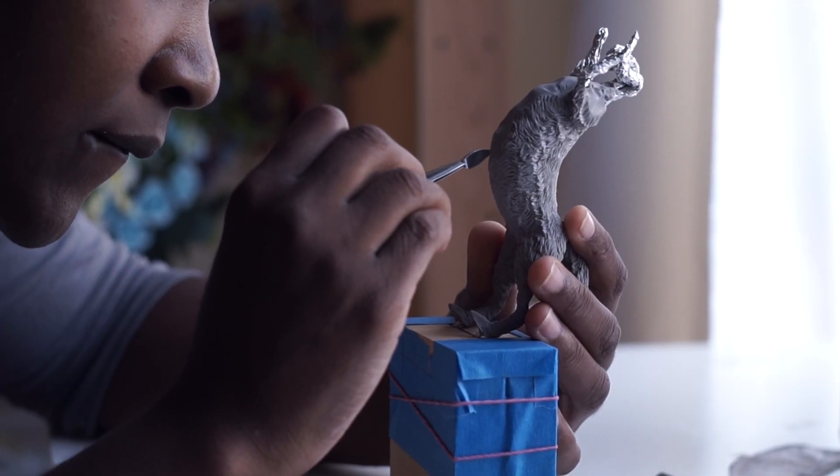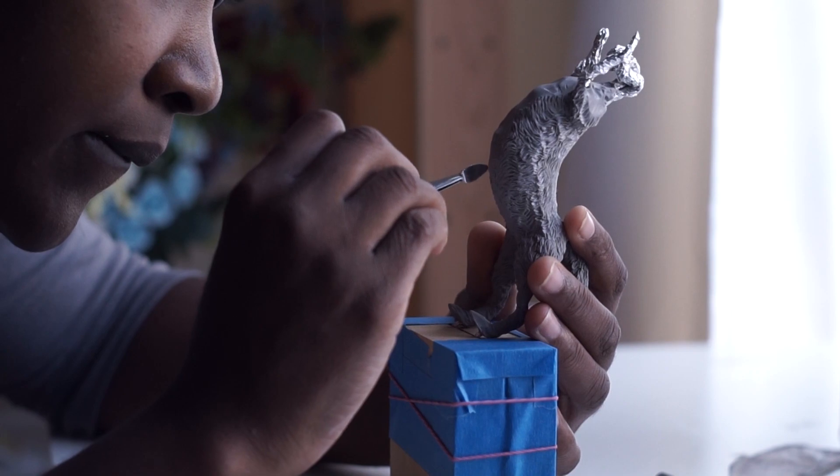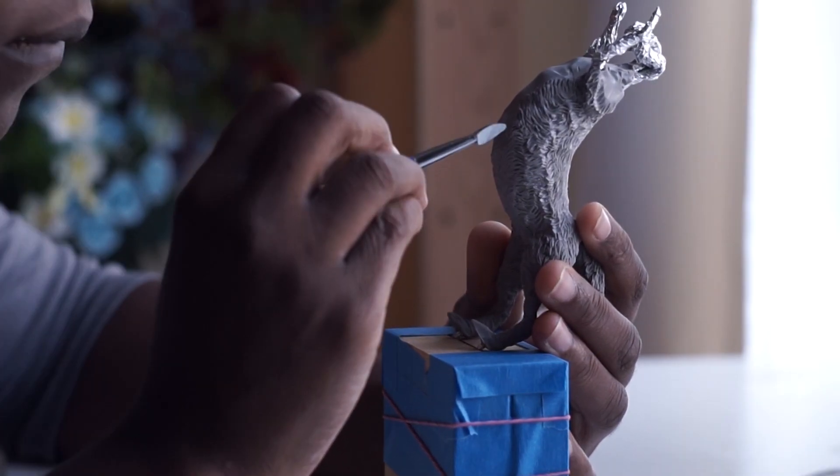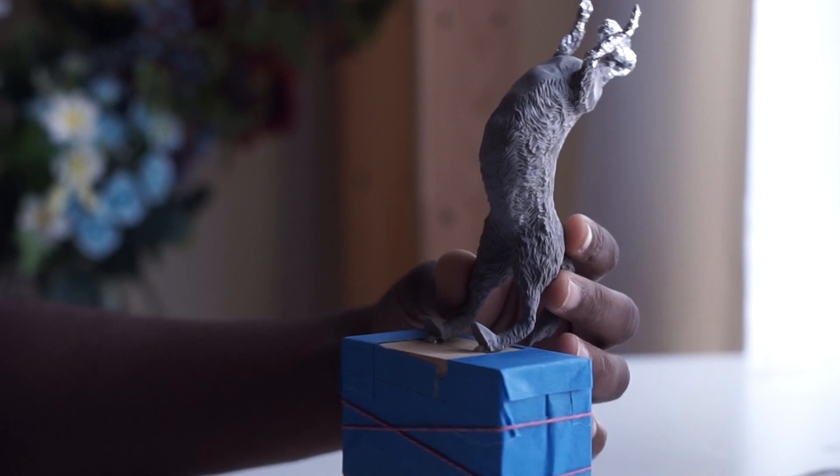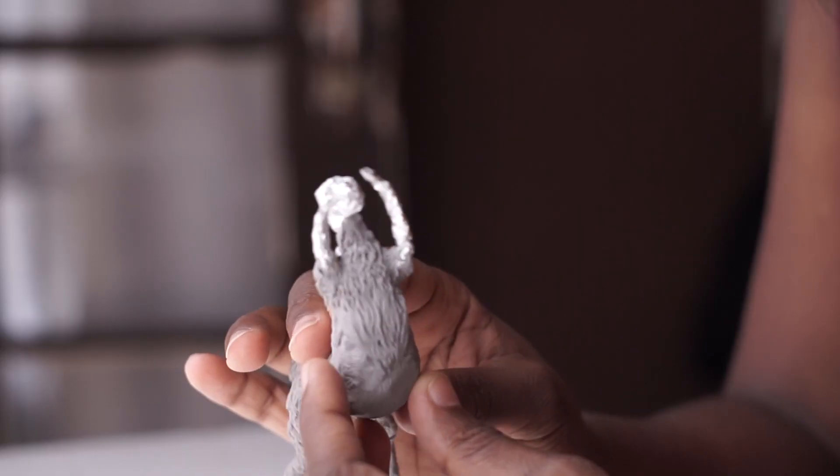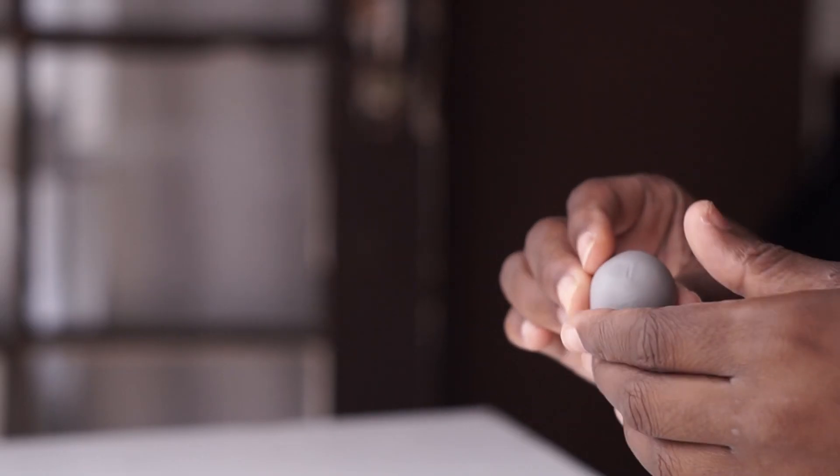I'm using Sculpey Firm Polymer Clay and I do like this clay better because it's not so soft and sticky. So when I use tools on it they don't stick to the clay and I can actually move it and manipulate it in a way that I want and then have it stay like that and not get smudged the moment it gets touched.